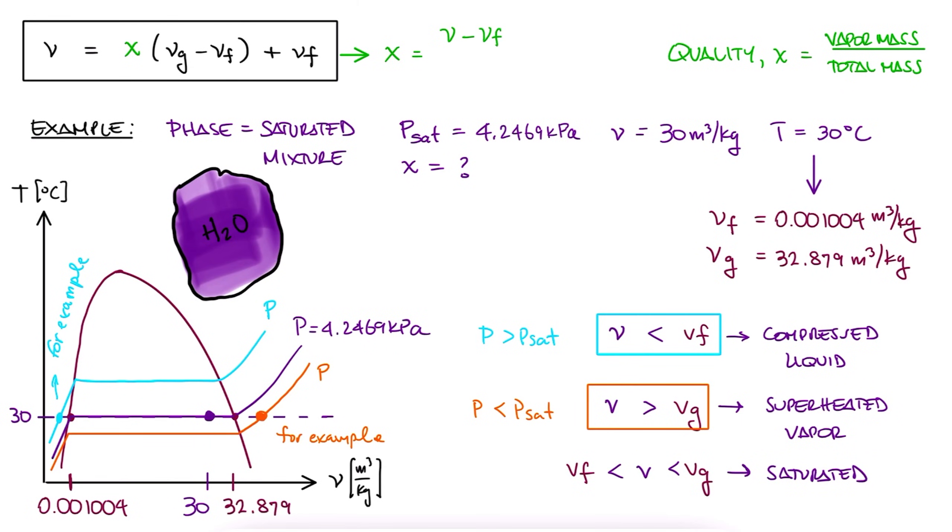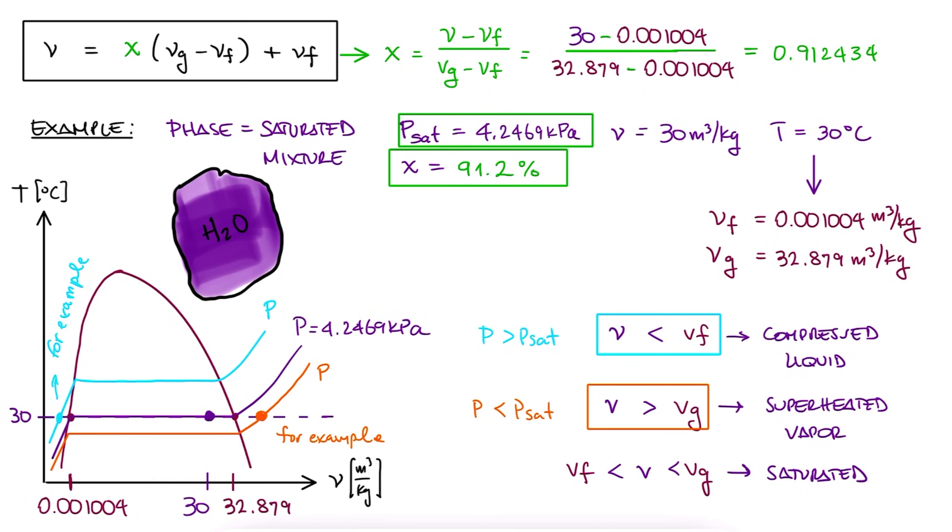And with these values, we can easily use the expression we just defined to solve for and calculate our quality x. Like I said before, there's some links in the description below where you'll find some examples for interpolating values from property tables, as well as some examples where we use quality as a given information to solve for properties of our substance. You'll also find the links to other lectures of the thermodynamics course, as well as other engineering courses. Thanks for watching!